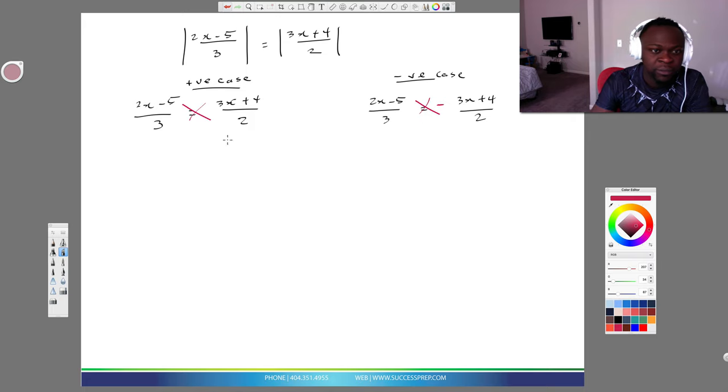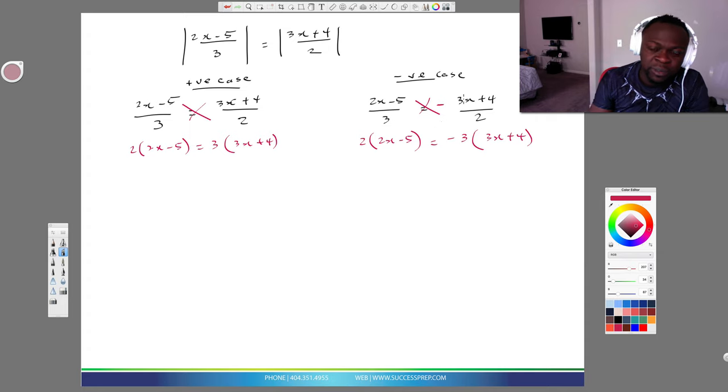So I'm going to cross multiply. When I cross multiply on this side, this 2 will go up here and this 3 will come up here. So when 2 comes up here, I'm going to get 2 of 2x minus 5 equal to when 3 comes here, it's 3 of 3x. And then over here I'm going to get this 2 to come here with 2 of 2x minus 5, and then over here will be minus this 3, which will be 3 of 3x plus 4. So again, I'm cross multiplying, getting this 3 to multiply here, this 2 to multiply here, this 2 to multiply here, this 3 will multiply through this guy and also this guy.